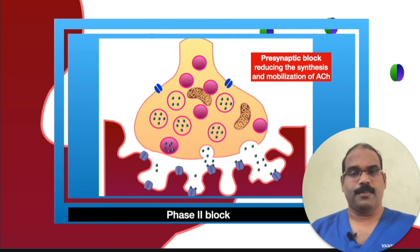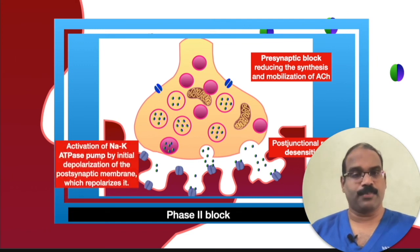Possible explanations for the development of phase two block include presynaptic block reducing the synthesis and mobilization of acetylcholine, post-junctional receptor desensitization, and activation of the sodium-potassium ATPase pump by initial depolarization of the post-synaptic membrane which repolarizes it.